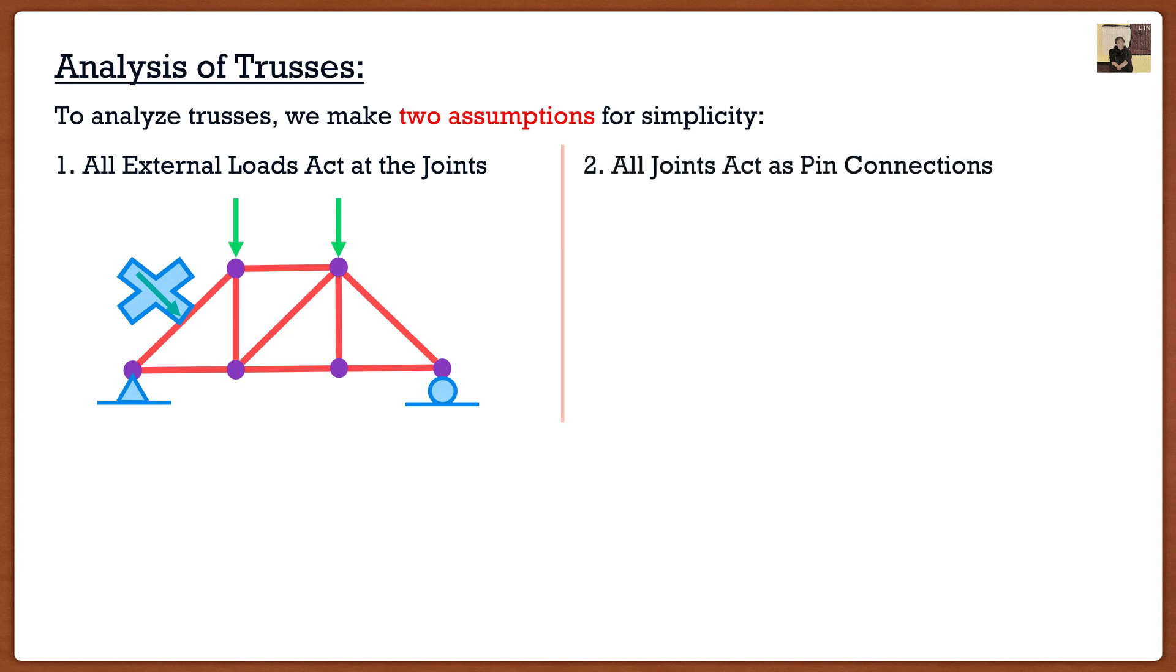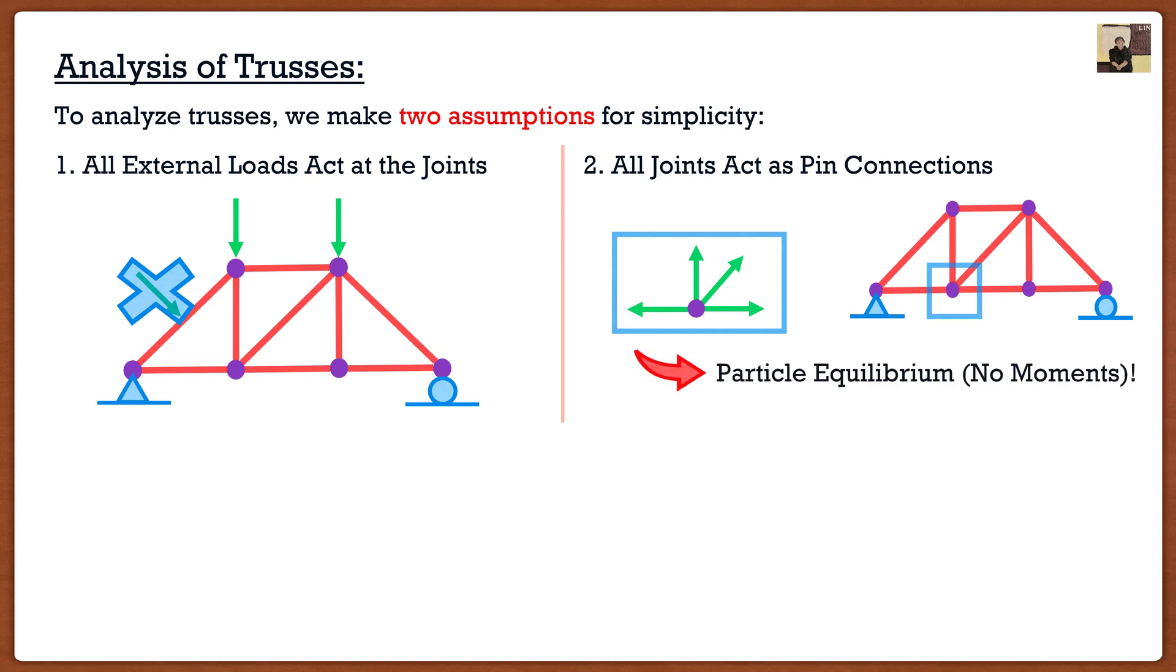The second one is that all joints act as pin connections. You guys are saying, Clayton, what exactly does this mean? Well, if I take my truss and analyze one of these joints, the joint basically acts as a dot and all the forces intersect at that dot. If we remember, this is actually a case of particle equilibrium. The key thing here is this joint provides no moment resistance, or if we look at our free-body diagram, there's no moments. This is basically particle equilibrium with no moments.